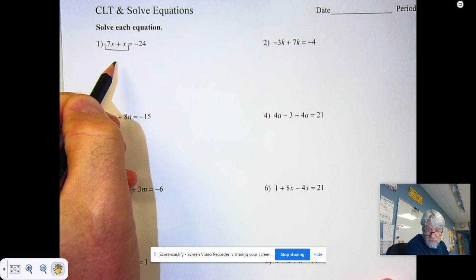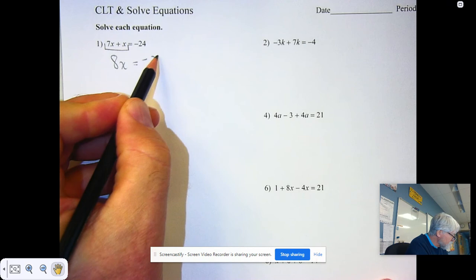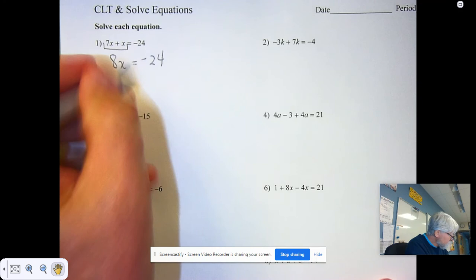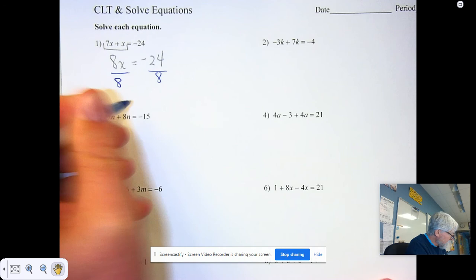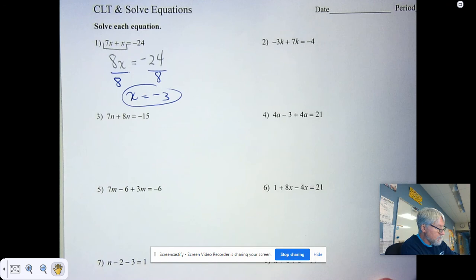7x's and one more x, that's 8x equals negative 24. Once we've combined the like terms, like we've been doing, divide by 8 and we get our x of negative 3.